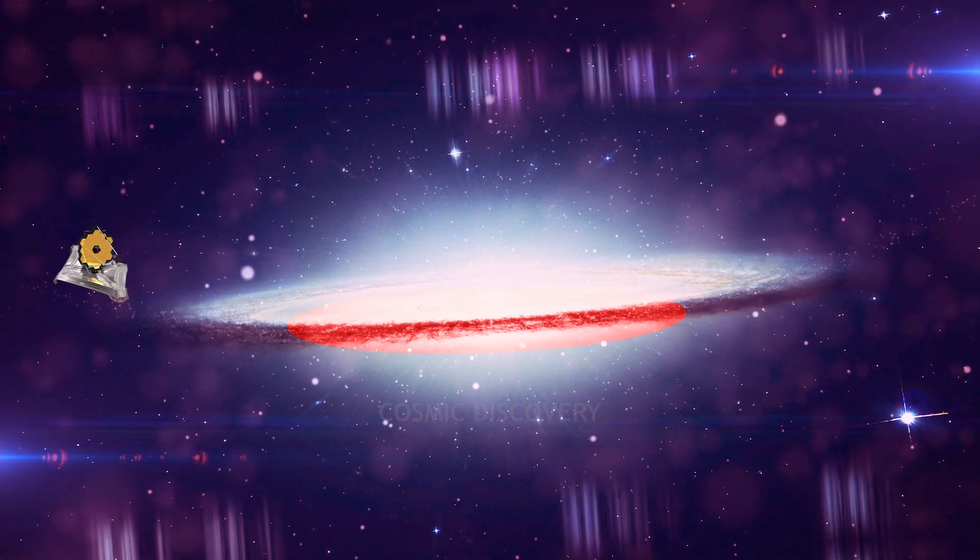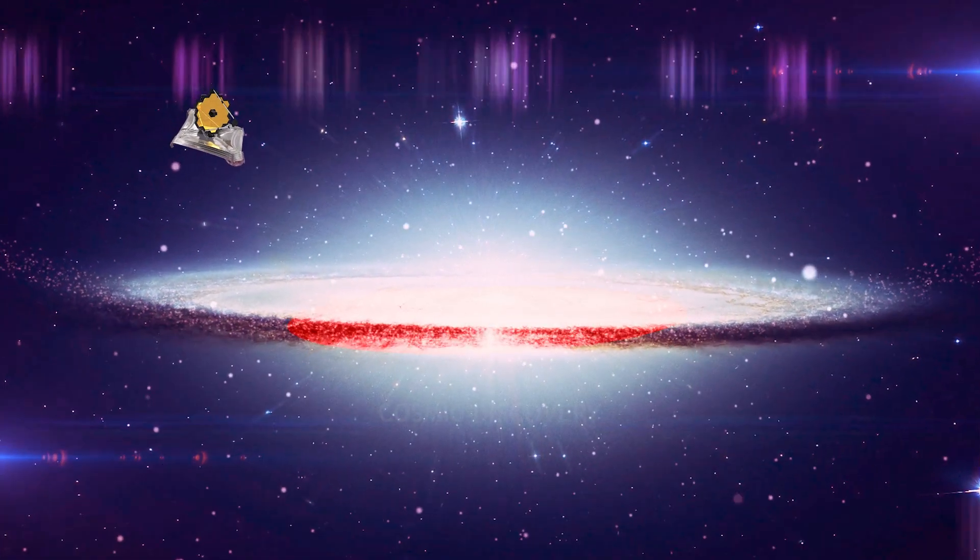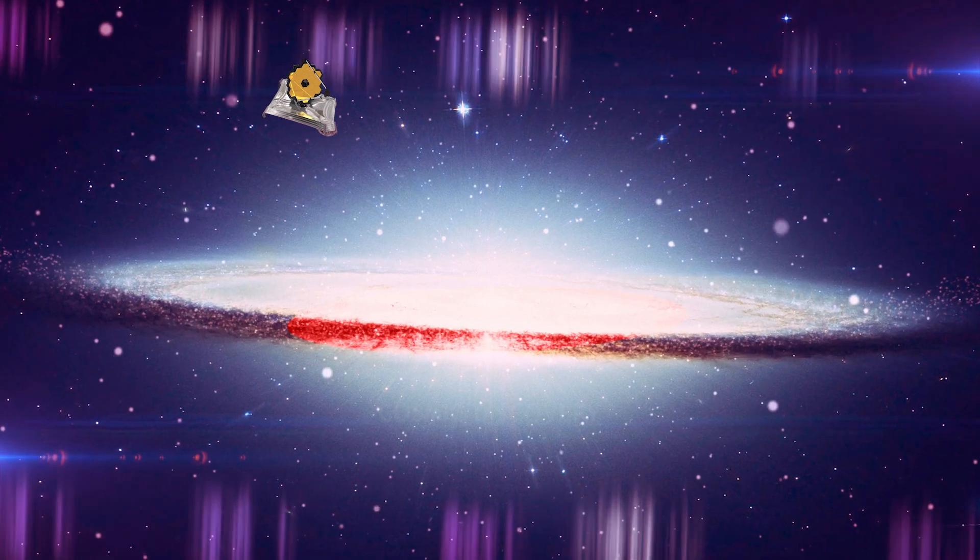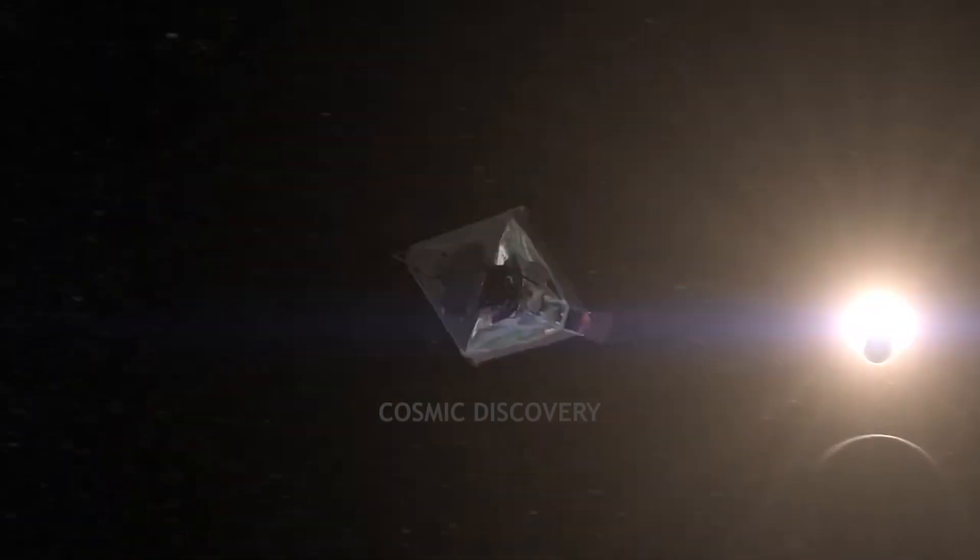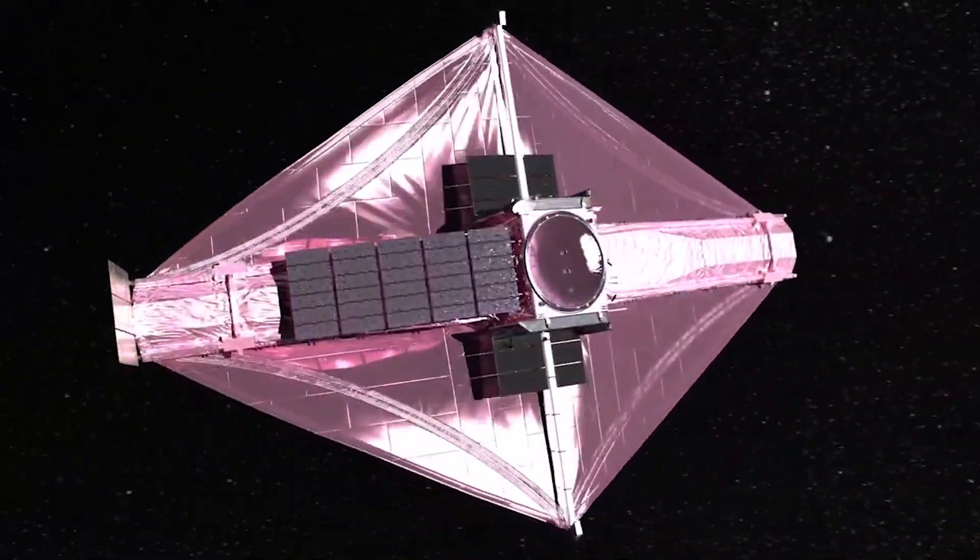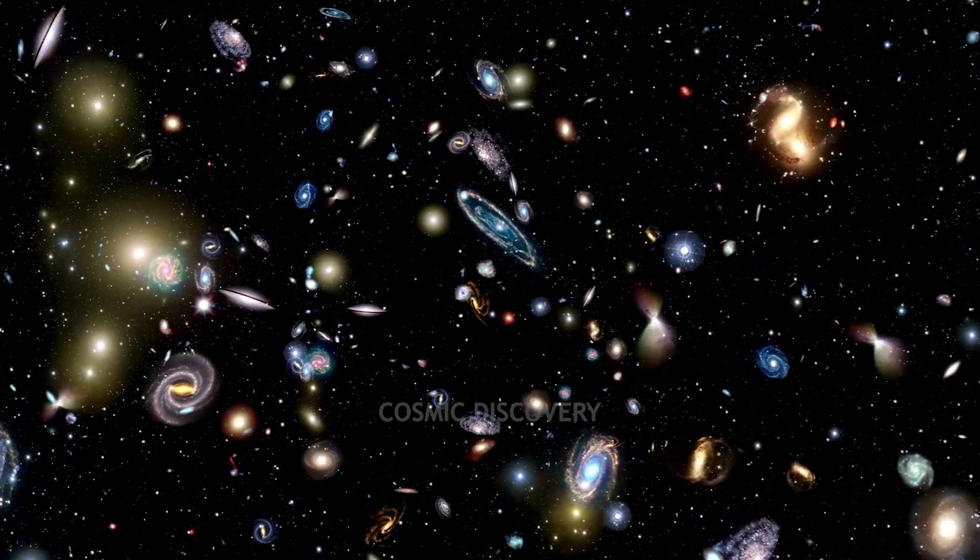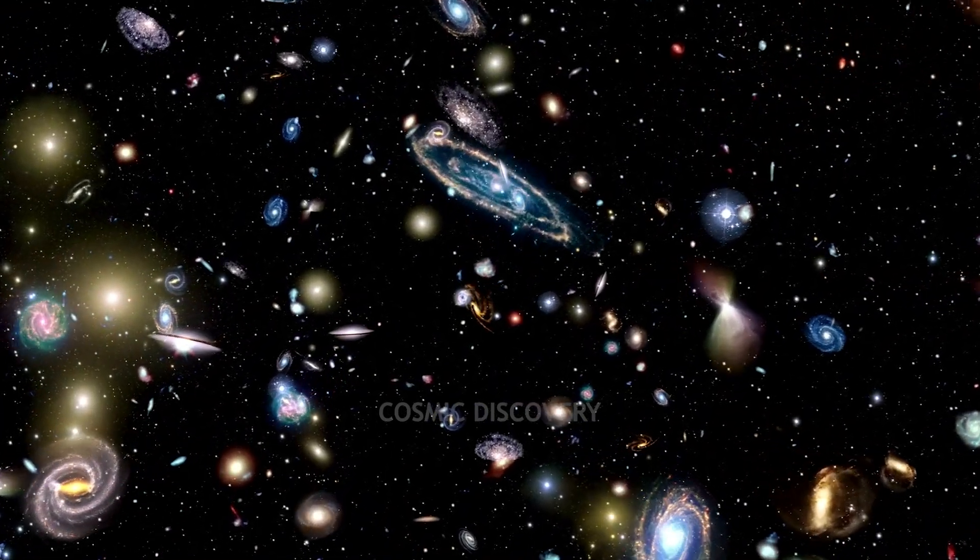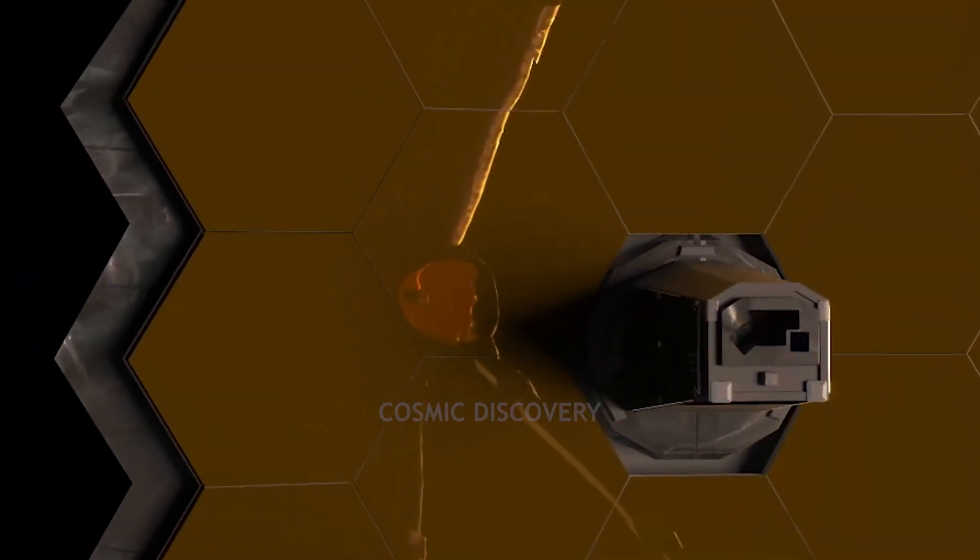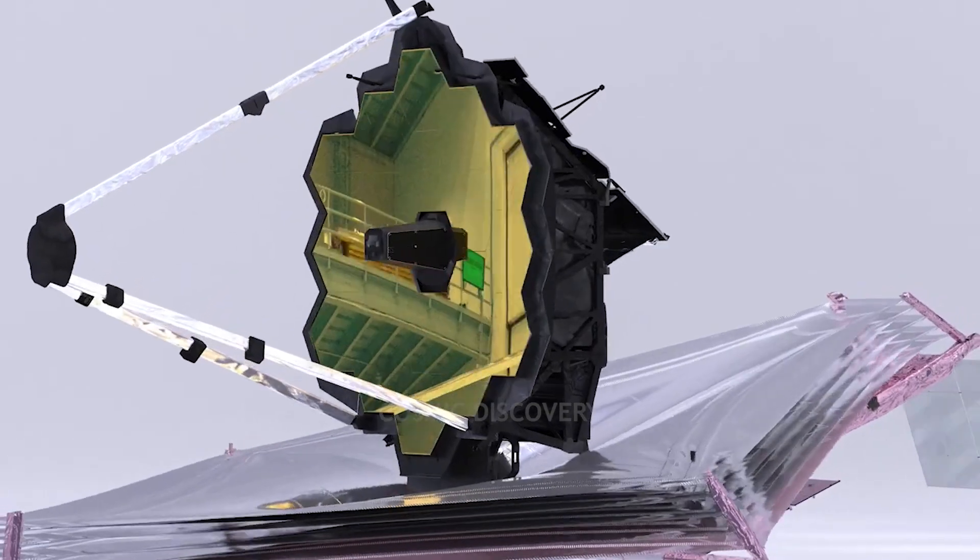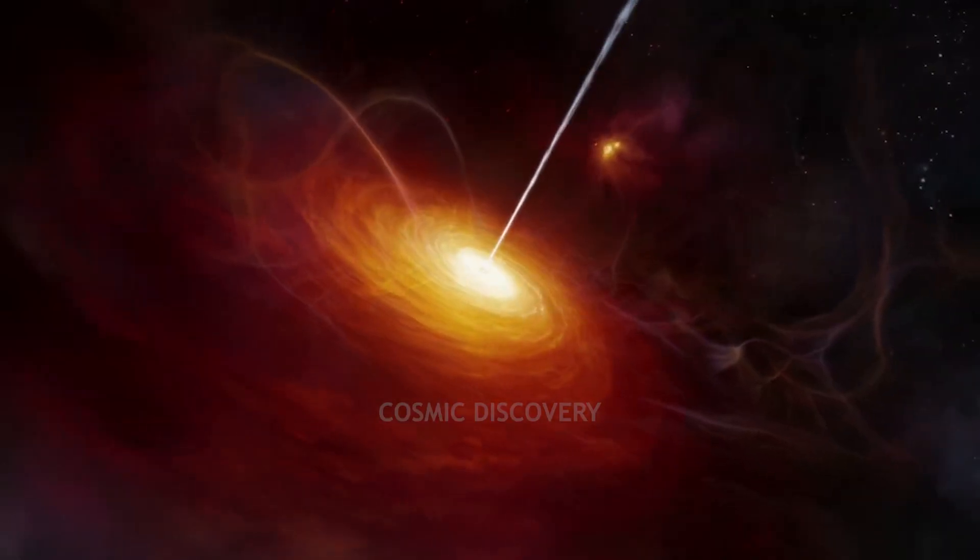Enter the James Webb Space Telescope, equipped to observe in the infrared spectrum. This capability is crucial for detecting objects at redshifts 11 and beyond. Upon its launch, the telescope provided a fresh perspective on the universe. From the depths of time, the telescope unveiled dozens of galaxies that could be among the earliest known in the universe. Initial observations focused on galaxies with remarkably high redshifts, suggesting an earlier formation than previously understood.